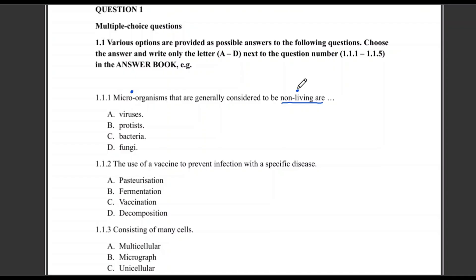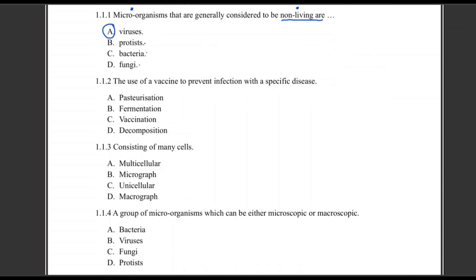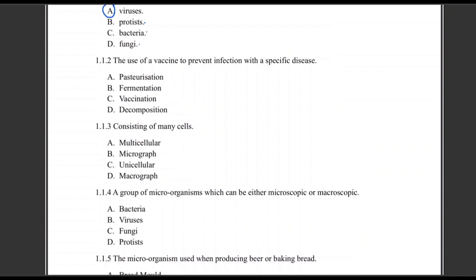So we can start by eliminating the obvious incorrect ones. This is an easy one, right? Because protists are living, bacteria are living, fungi are living. Viruses are known to be non-living microorganisms, so A is your correct answer. So if you find any question in a test challenging or a little bit difficult, even if you can eliminate one or two options, eliminate them. Just cross them out with a pencil if that is allowed at your school, so that you are left with maybe the two options that you're really not sure about. Start by eliminating the obvious incorrect ones.